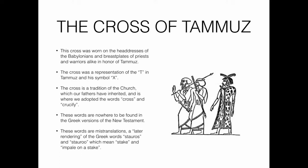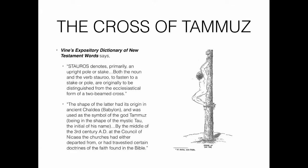The cross is a representation of the T in Tammuz — his symbol. The cross is a tradition of the church which our fathers have inherited, and is where we adopted the words 'cross' and 'crucify.' These words are nowhere to be found in the Greek versions of the New Testament — they are mistranslations, a later rendering of the Greek words 'stauros' and 'stauroo,' which mean stake and to impale on a stake.